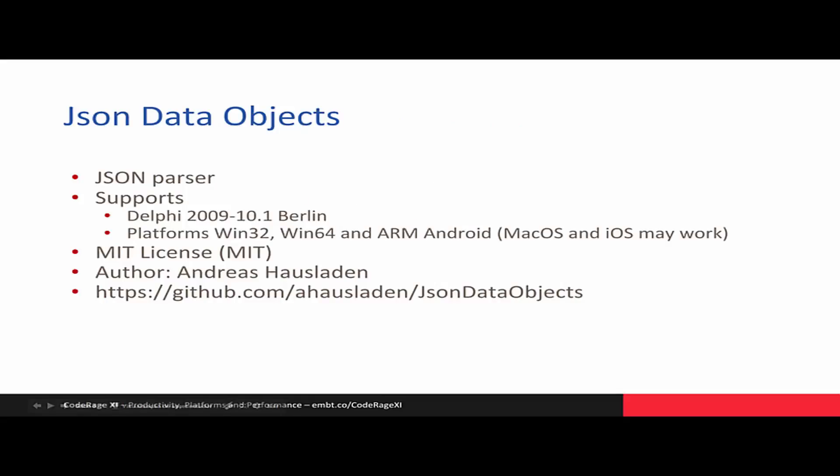JSON.objects is a JSON parser that supports Delphi 2009 to Berlin. The author is the great developer Andreas Hausladen, and the project is hosted on GitHub. If you don't know JSON.objects, you should check it out.